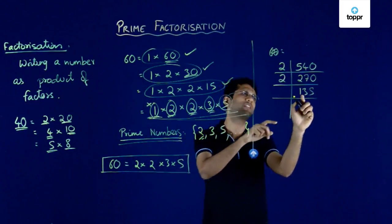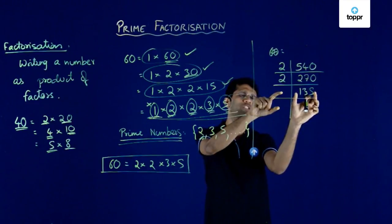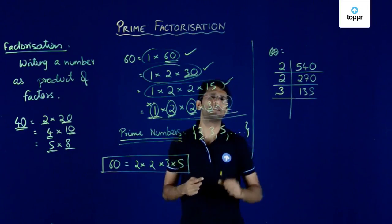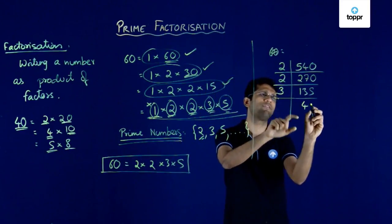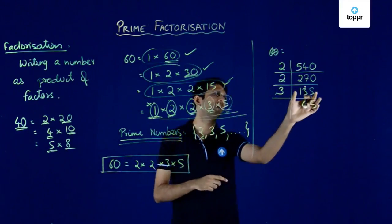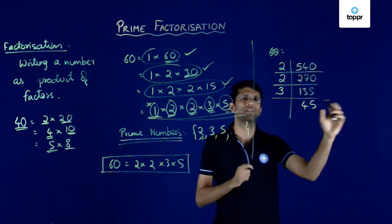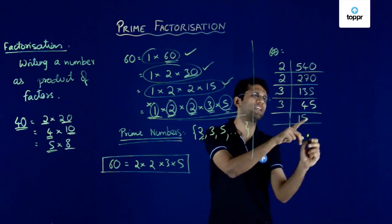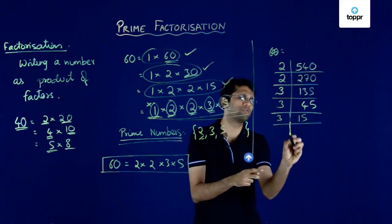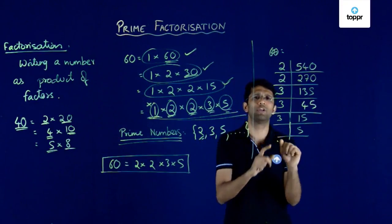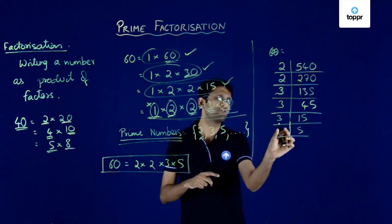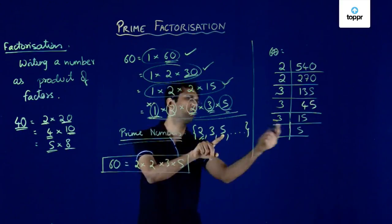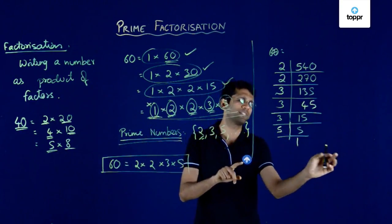Next, we look at 135. Since 2 does not divide this odd number, we look at the next prime number which is 3. 3 can divide 135 and gives the quotient 45 and remainder 0. Again, dividing 45 by 3 gives us 15, and 15 can further be divided by 3 giving us 5. This 5 cannot be divided by 3, so we look at the next higher prime. Since 4 is not prime, we move to 5. And 5 does divide itself giving remainder 0 and quotient 1.